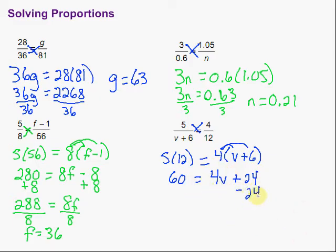Again, our goal is to get that variable by itself. So we're going to get rid of this 24 by doing the opposite, of course. Subtract 24 from both sides. There we have 46. No, excuse me, 36. Okay. So we have 36 equals 4v. Divide by 4. Divide by 4. And we're left with v equals 9.